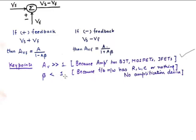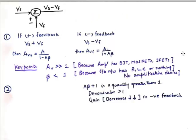Now beta is going to be less than 1 because feedback network has impedances that is going to bring the output voltage level down. No amplification device is featured here. So that brings us to the point that if A beta plus 1 is a quantity greater than 1, then the denominator becomes greater than 1. So the gain decreases.